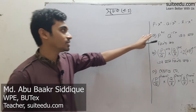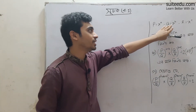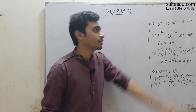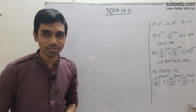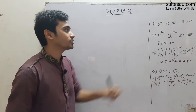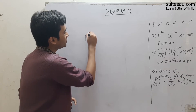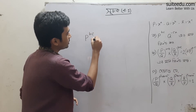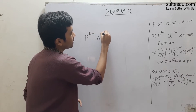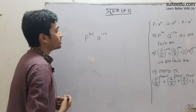So, we will be talking about P is equal to x to the power A, Q is equal to x to the power B, and R is equal to x to the power C. We will be evaluating P to the power BC into Q to the power minus CA.